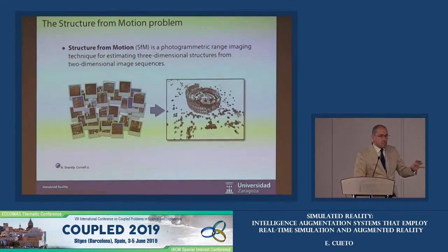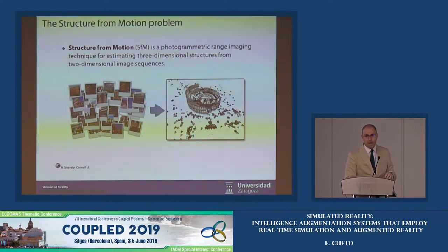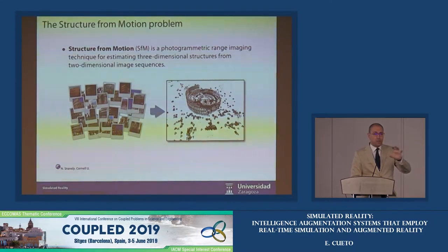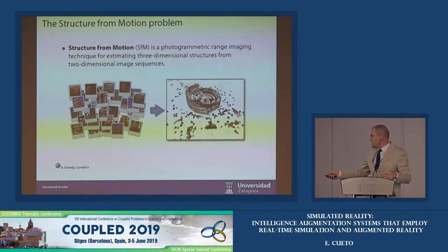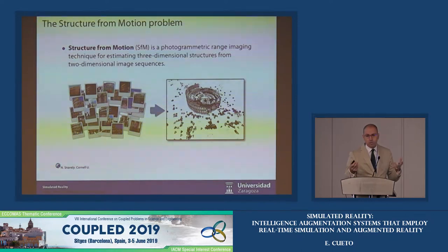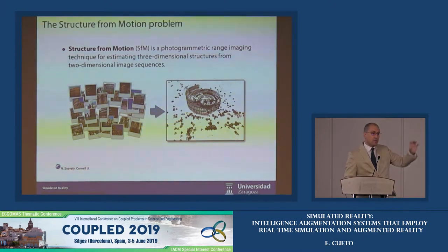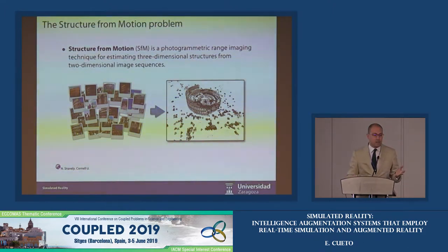If the solid is rigid, this is a standard problem in computer vision called structure from motion. You just move the camera — since you have only one camera and not two eyes — to record the object from several positions. There is a very nice application from Cornell in which, by using pictures taken by tourists and uploaded to Google Maps, they reconstruct very detailed 3D geometries of several monuments, and also determine the position of each camera at the moment the picture was taken.